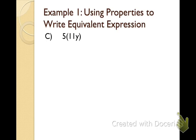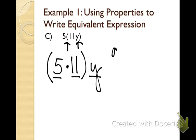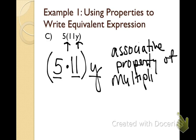This is still part of example one, part C. We have 5 × (11y). We can't put letters and numbers together directly, so we change the associations by moving the parentheses: (5 × 11) × y. We've kept the order the same and just changed which factors are grouped together. This is the associative property of multiplication, because we're multiplying. We get the same answer — it just makes the math easier.